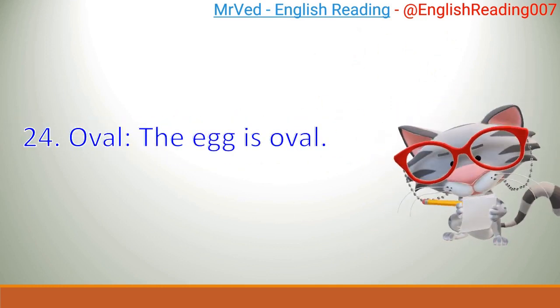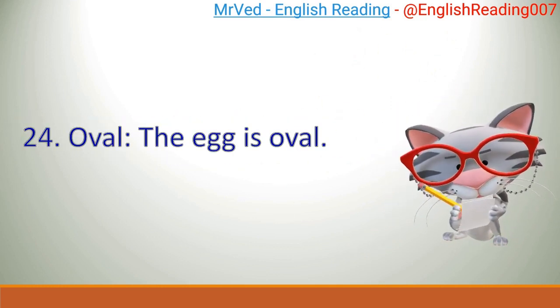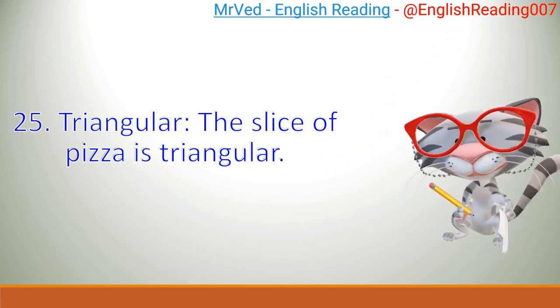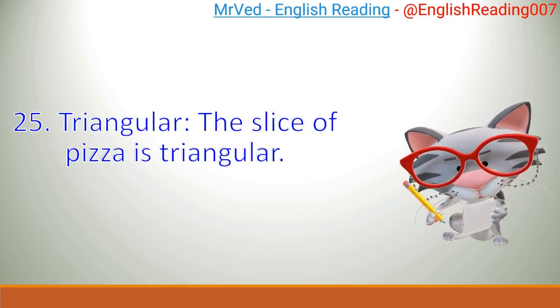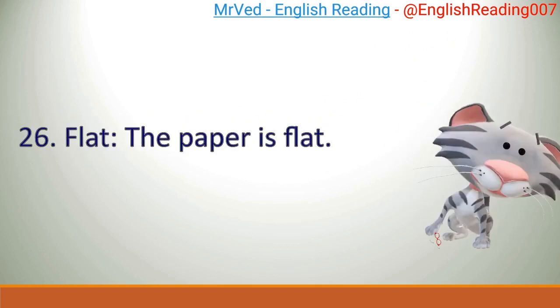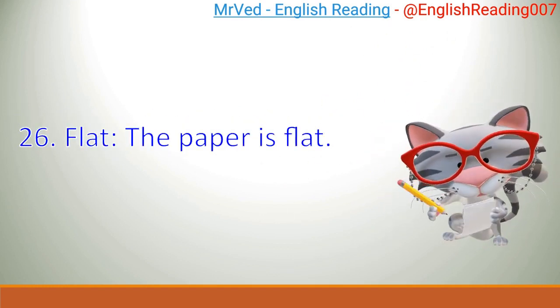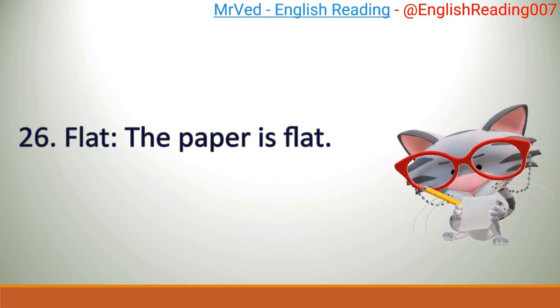24. Oval. The egg is oval. 25. Triangular. The slice of pizza is triangular. 26. Flat. The paper is flat.